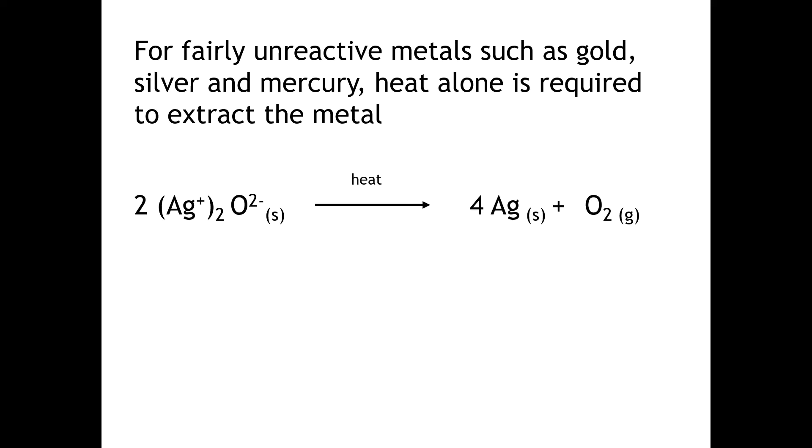Note that we've got silver ions on this side and silver atoms on this side. This is an example of a reduction reaction because we're getting a gain of electrons. We're having metal ions gaining electrons. You can see the electrons are on the left-hand side to form metal atoms.